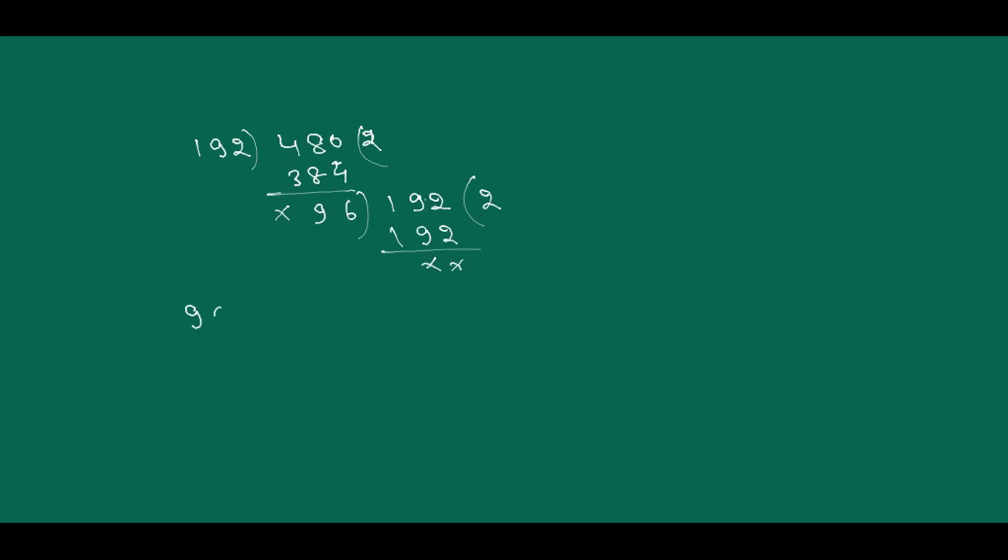Now check your answer with the next one, 480, that is 672. 672, is it fully divisible or not? 96 multiplied by 7. 672 divided by 96 equals 7. It is fully divisible. Yes, fully divisible. Now you can consider that 96 would be the number by which you can fully divide.